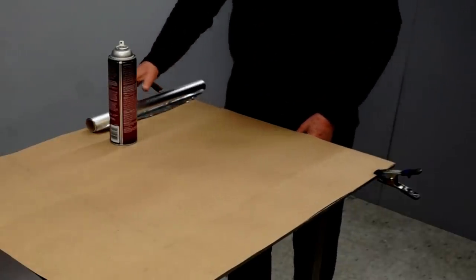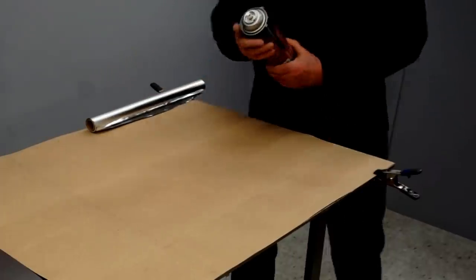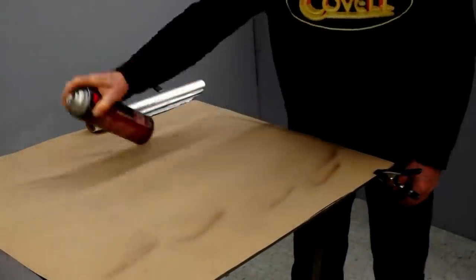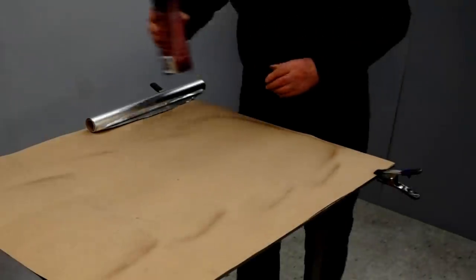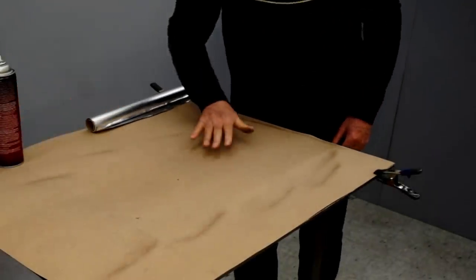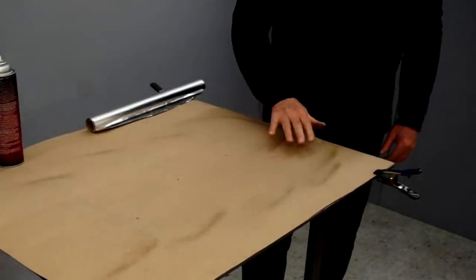So I'm going to use spray adhesive to hold the foil to the paper. Just a light coating of adhesive is all it takes. And I'm going to let that dry for a minute.